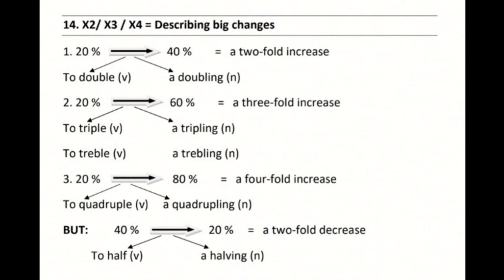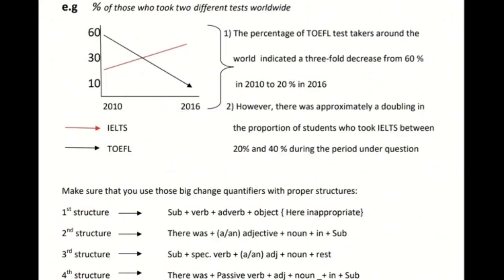But what if the reverse happens — what if 40 percent goes back to 20 percent? You do not use 'twofold increase' or 'doubling'. Instead, the verb form is 'to halve' and the noun form is 'a halving' — pay attention to the 'v' replacing 'f' before the '-ing' ending. For example: 'The figures halved from 40 percent to 20 percent', or in noun form: 'There was a halving in the percentage of orange sales from 40 to 20 percent', or 'there was a twofold decrease in the percentage of orange sales from 40 to 20 percent.'